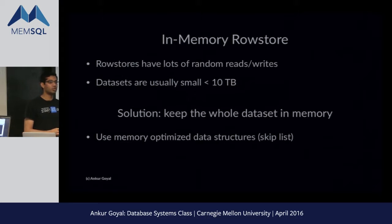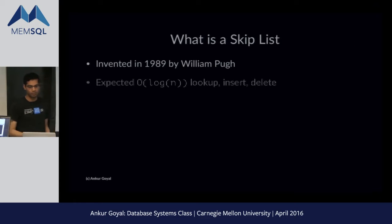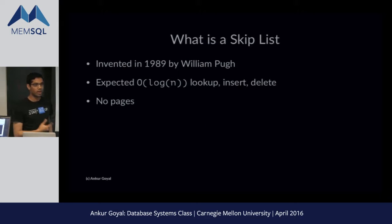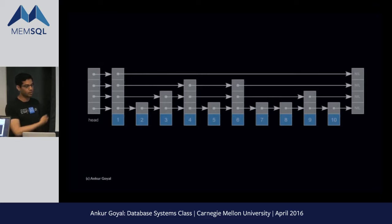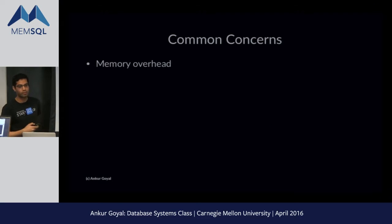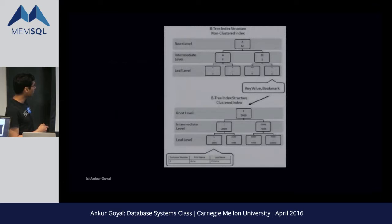If we keep the whole data set in memory, we can use a data structure optimized for memory called a skip list, and there are a number of advantages we get using this in MemSQL. How many people here have heard of a skip list? The big thing is that there are no pages — that particular detail is what enables you to implement a skip list lock-free, and that's very significant. Here's a picture of a skip list. One common concern is memory overhead.